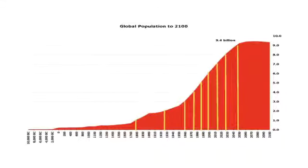The American Dream overseas represents a migration — a cultural migration. The American Dream started with California; it started out as the California Dream.